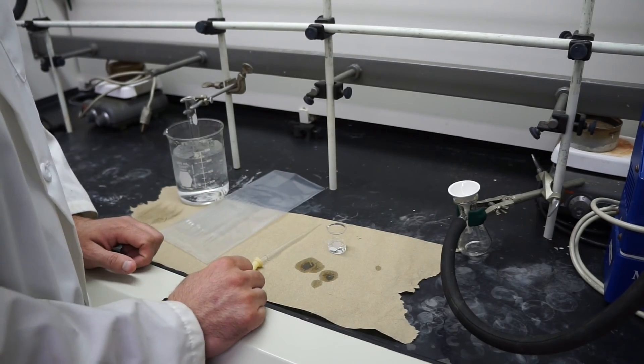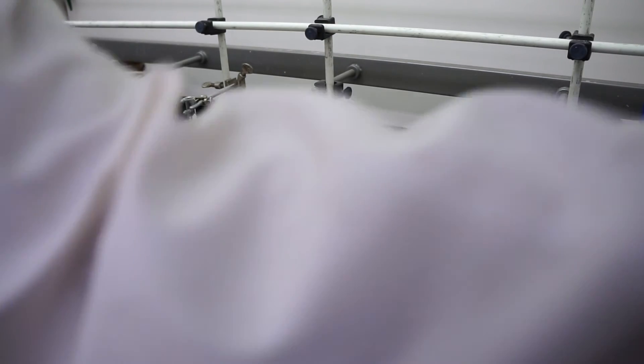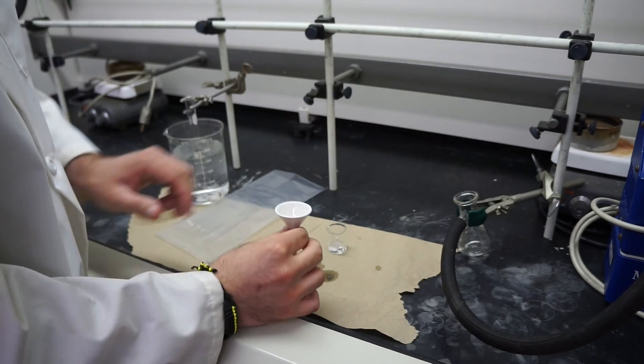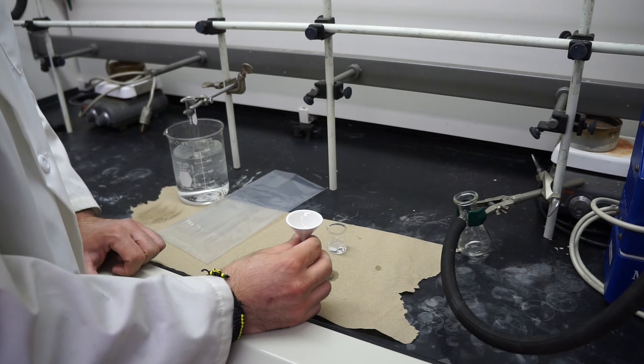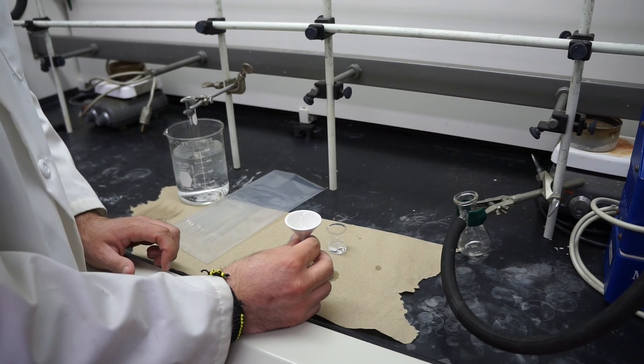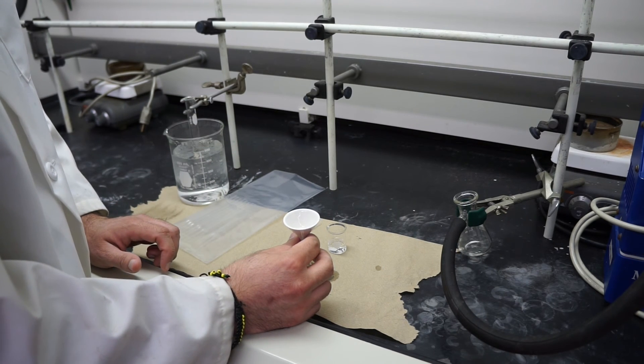Now once you've let that suck dry for about five minutes, you'll turn off the vacuum. You'll go ahead and take this off and make sure you put it in a secure place. And then you'll let it sit for a week and next week you'll take the melting point and get the product yield.